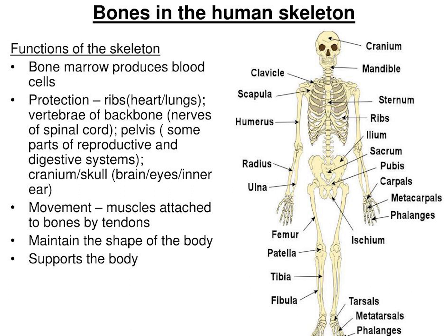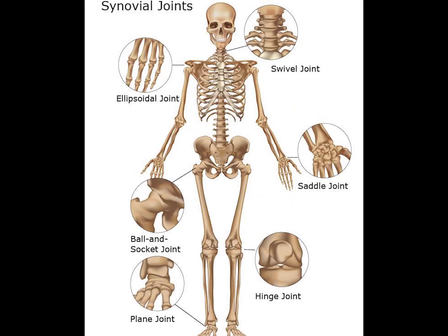During embryonic development, bones are developed individually from skeletogenic cells in the ectoderm and mesoderm. Most of these cells develop into separate bone, cartilage, and joint cells, and they are then articulated with one another.